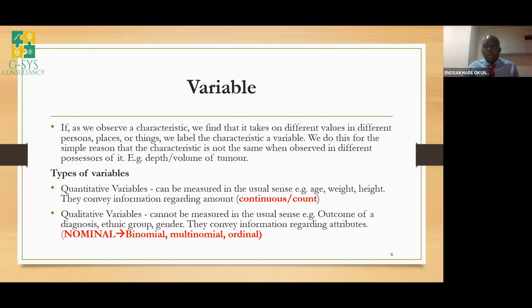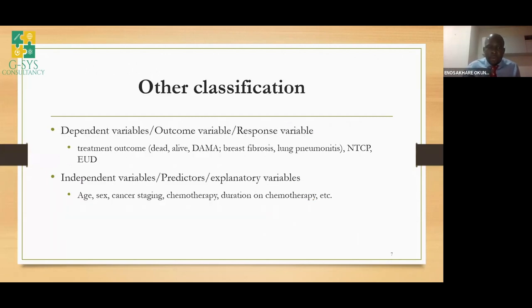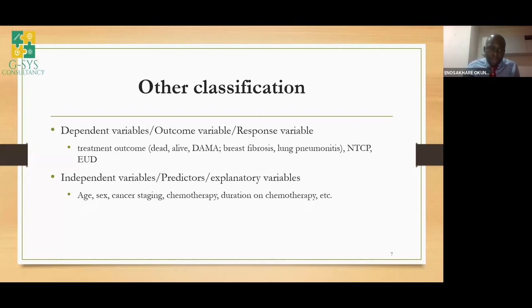Another classification is dependent and independent variables. The dependent variable is also called the outcome or response variable. The independent variable is what predicts the outcome — also called the explanatory variable. In other literature the term is explanatory variable, and some colleagues in the medical field call them risk factors for a particular outcome.